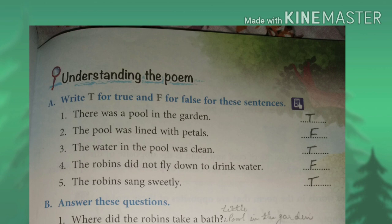Number 3: The water in the pool was clean. The answer is true. Number 4: The robins did not fly down to drink water. The answer is false, as the poem says that the robins definitely had water there and also had a bath.